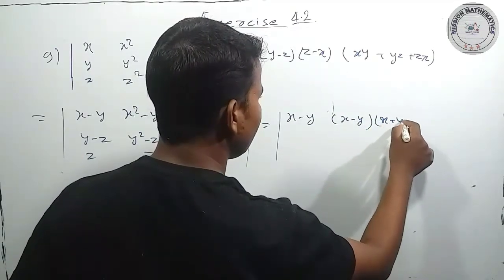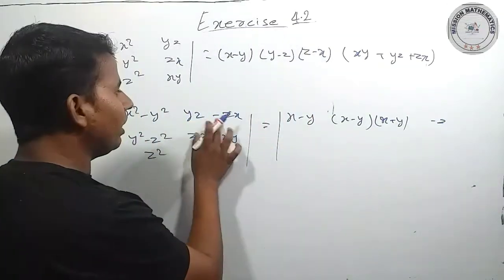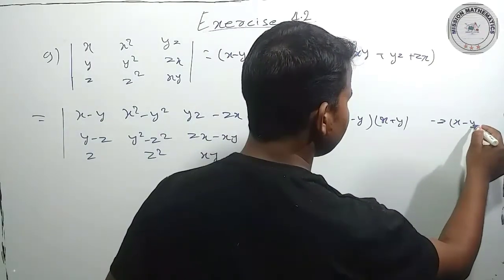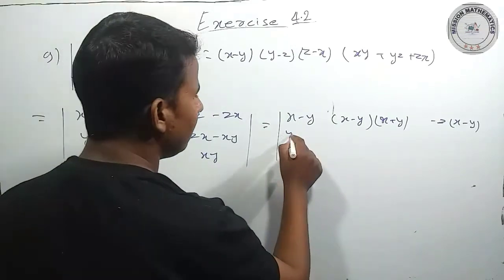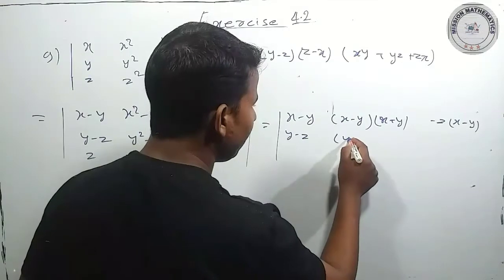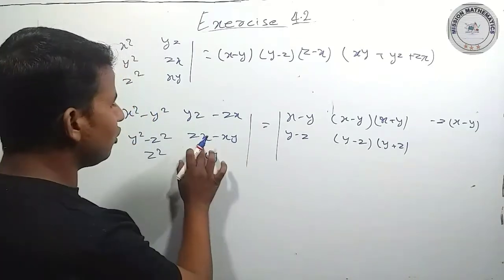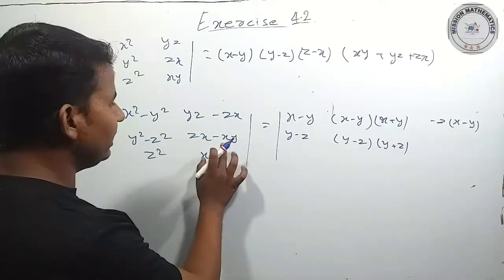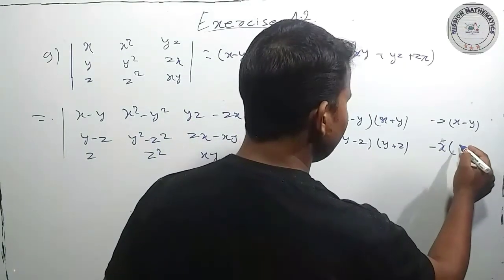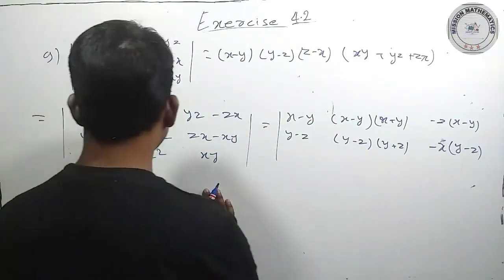And then z minus y into x plus y. और फिर यहां से z common है, y minus z और y plus z लिख देंगे। और फिर यहां से x common है और z minus y है, तो minus को बाहर common करके x लिख दिया और y minus z हो गया। और Row 3 को as it is रहने देंगे।